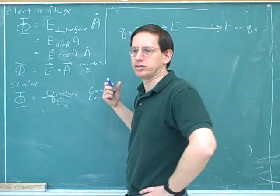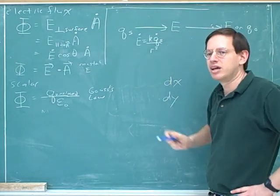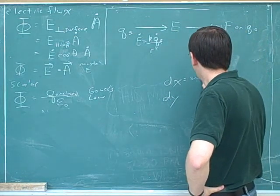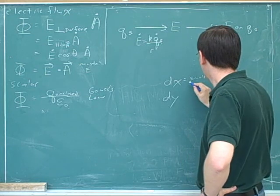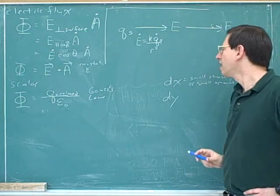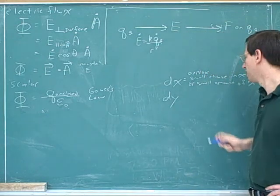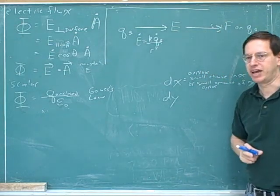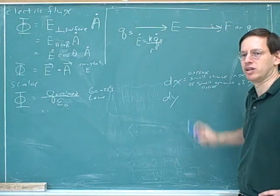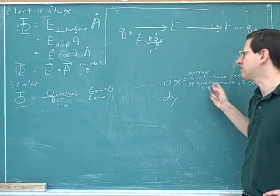To generalize for a non-constant electric field, we're going to use differentials — like dx or dy from calculus. What these symbols mean is a small change in x, or a small amount of x. Often these differentials are only approximate, representing an approximate small change or approximate small amount. Sometimes the approximation turns out to be exact, but in general these give us approximations. We just have to use context to decide.